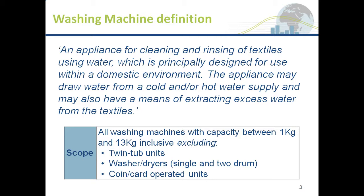What did we include? We included all types of automatic, semi-automatic, and manual machines; horizontal and vertical orientation — referred to here as top and front loaders; all types of configurations including drum, impeller, agitator, and nutator; warm and cold wash cycles; water intake of all kinds, so hot and cold fill; and all kinds of spin speed with no differentiation.